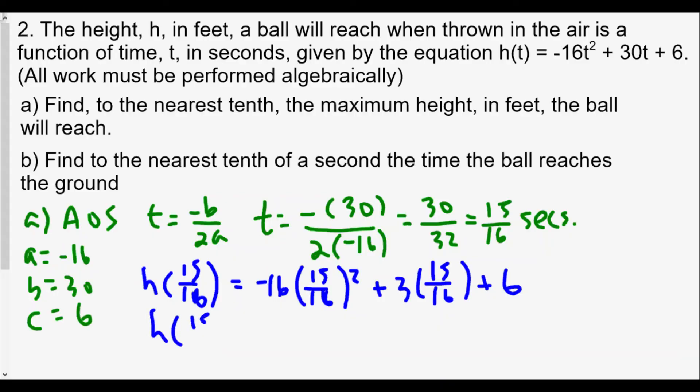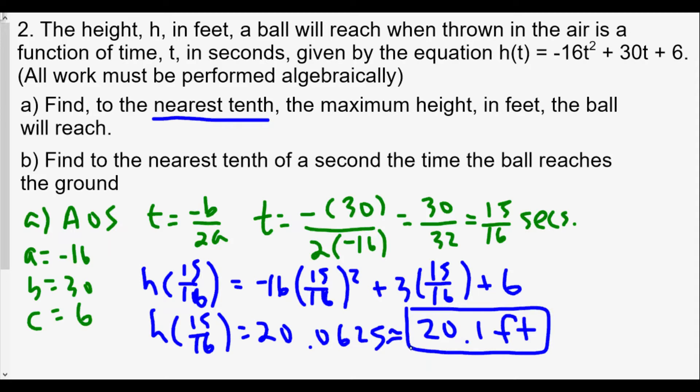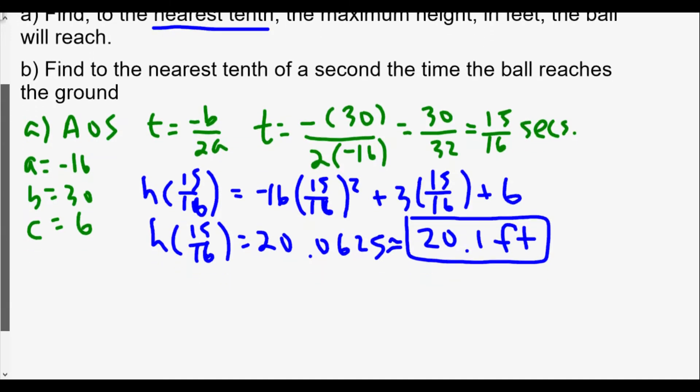To the nearest tenth we get 20.0625, so h(15/16) = 20.0625. Since we're looking for the nearest tenth, it will be 20.1 feet. That's the answer for our first question. The y-value is the height we're looking for, and it occurs at the vertex, so the vertex is (15/16, 20.0625).